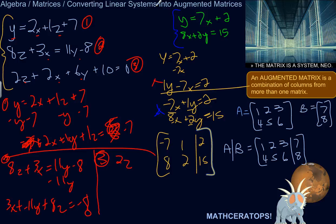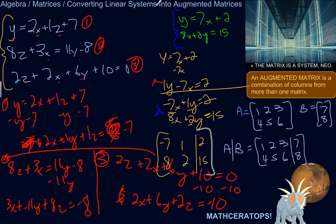Last one: 2z plus 2x plus 6y plus 10 equals 0. We want to get that constant over on the other side. Then let's rewrite the order of the variables: 2x plus 6y plus 2z equals negative 10. Now we've got all three equations written in the same way.